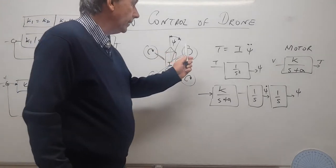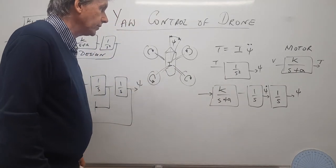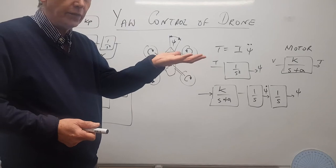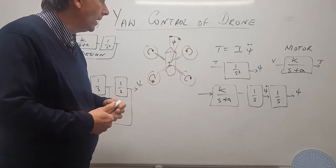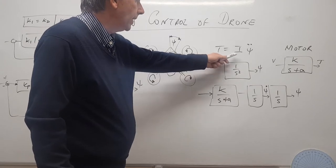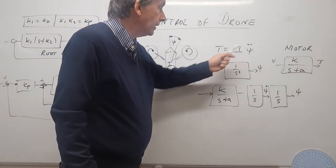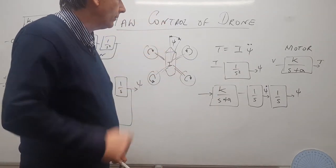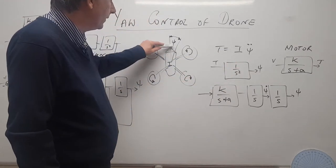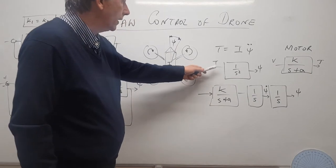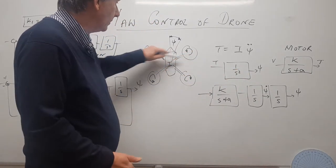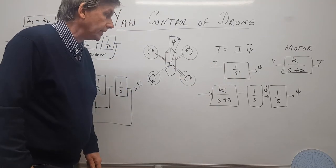The mathematical modelling is quite straightforward. Since the drone is hovering, there's very little friction, so we apply T = I·ÿaw, giving yaw double-dot as the output. This yields a transfer function between yaw angle and motor torque of simply 1/s².